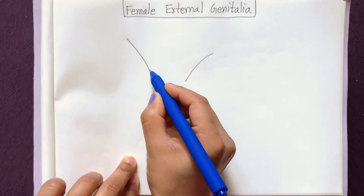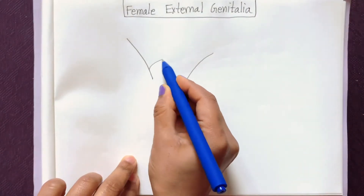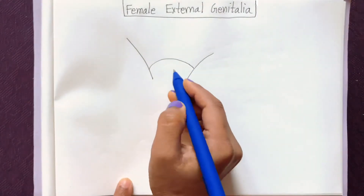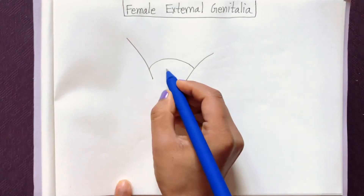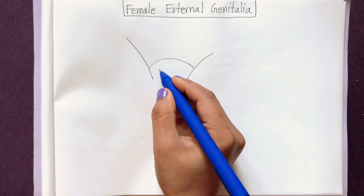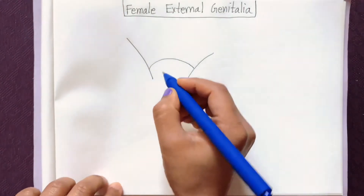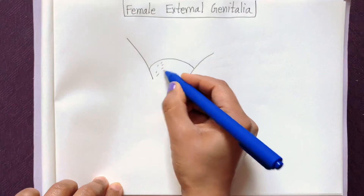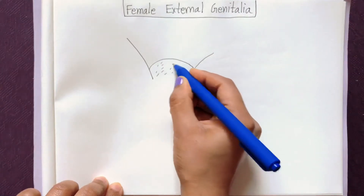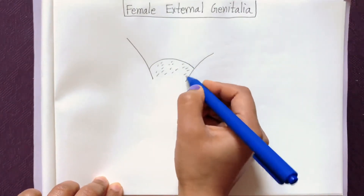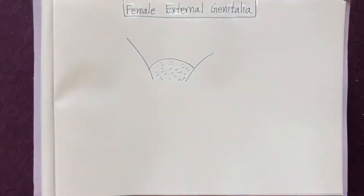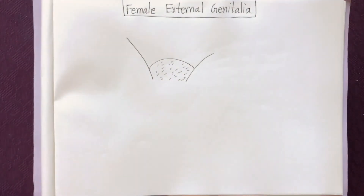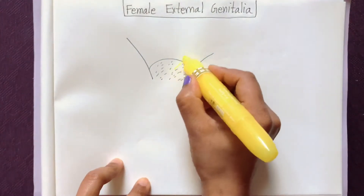This upper part is called mons pubis. Mons pubis is a cushion of fatty tissue covered by skin and pubic hair. This area is called mons pubis.